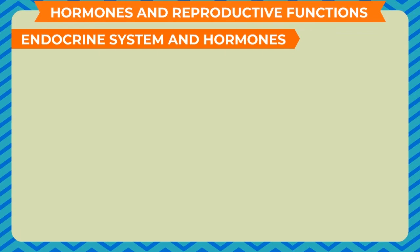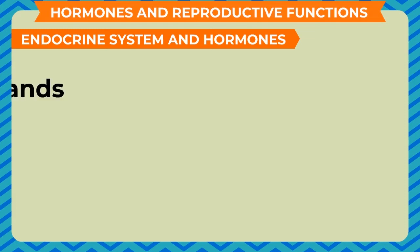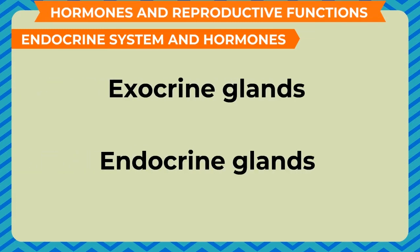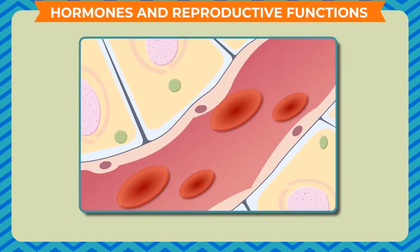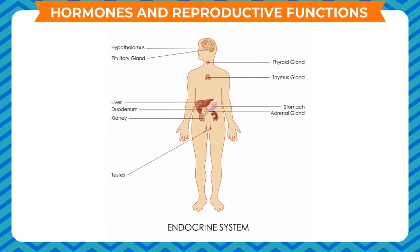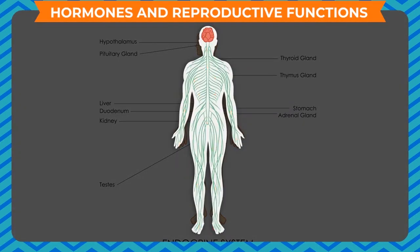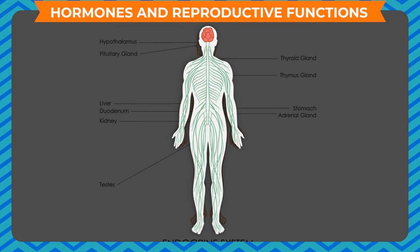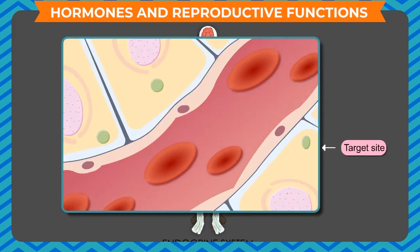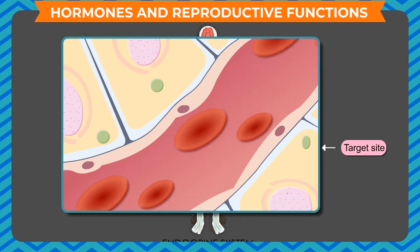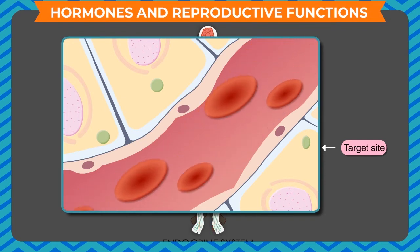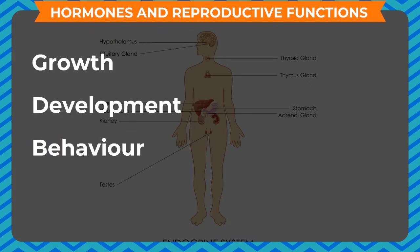We have two types of glands in our body: exocrine glands with ducts and endocrine glands, which are ductless glands. A gland which secretes its products into the bloodstream without the help of a duct is called an endocrine gland. Endocrine glands are also called ductless glands. There are a large number of endocrine glands in the human body. Hormones are chemical substances secreted by endocrine glands and carried to the target sites through the circulation of blood. They control growth, development, behavior and reproduction.